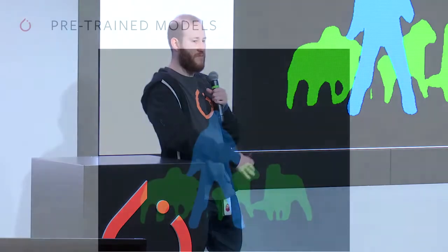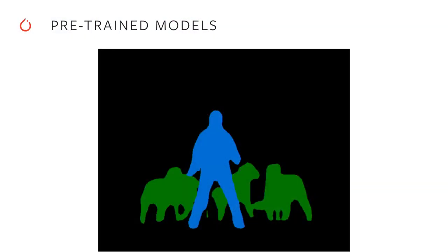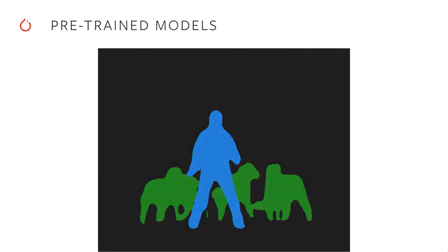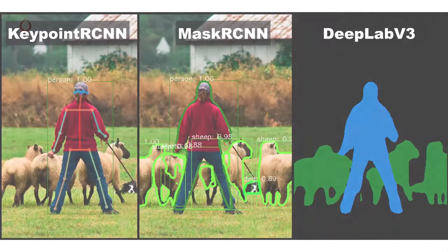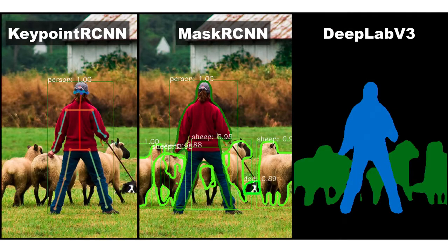For example, for self-driving cars you might also want to know where the person, road, and sky are so you can make decisions based on that — and that's what the segmentation models provide. All of these are models that have been published at top conferences and are available under different namespaces in TorchVision.